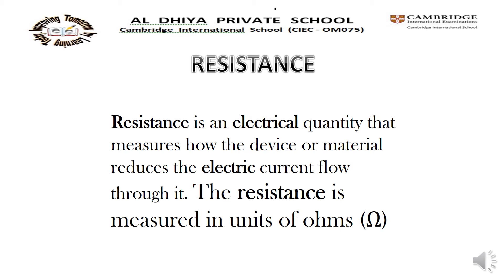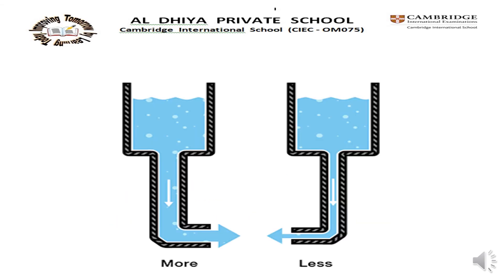Through one experiment, we can understand resistance very well. Here, there are two water tanks, each with a hose coming from the bottom. Each tank has the exact same amount of water, but the hose on one tank is narrower than the hose on the other. We can't fit as much volume through a narrow pipe as through a wider one at the same pressure — this is resistance.